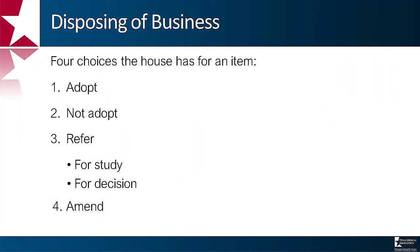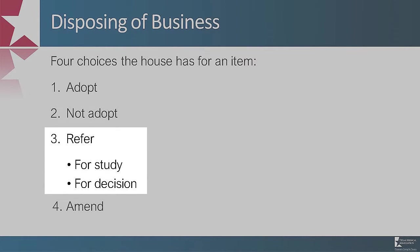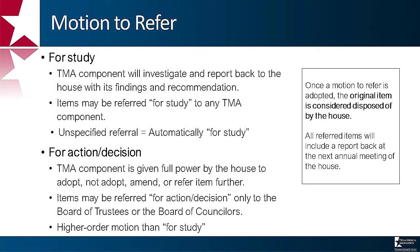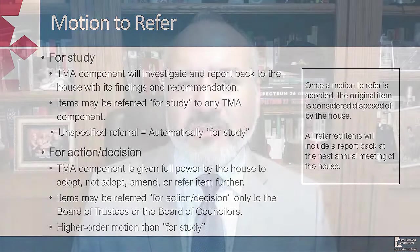There are four choices in the House for an item: adopt, not adopt, refer either for study or decision, or amend. If an item is referred for study or unspecified, the body to which it is assigned will investigate and report back to the House at the next meeting. If an item is referred for action decision, the TMA Board of Trustees or the TMA Board of Counselors has been given full authority to adopt, not adopt, amend, or to refer the item further. Once a motion to refer is adopted, the original item has been disposed of by the House and becomes the business of the body to which it is assigned. All referred items will include a report back at the next annual meeting of the House.